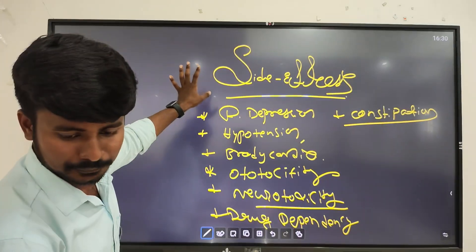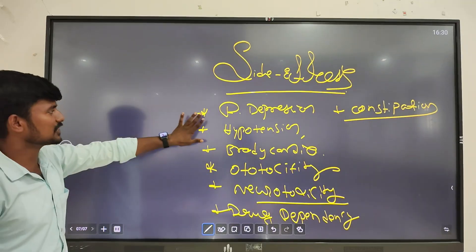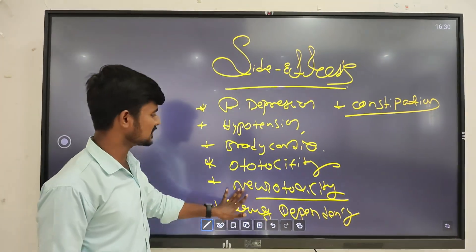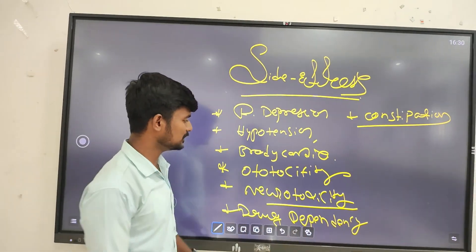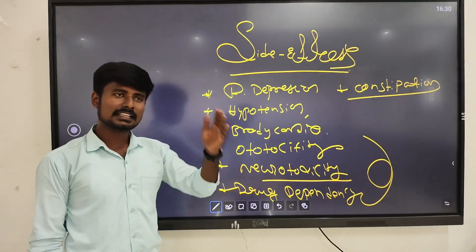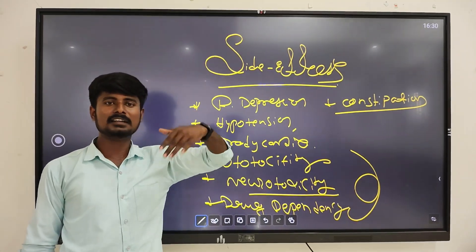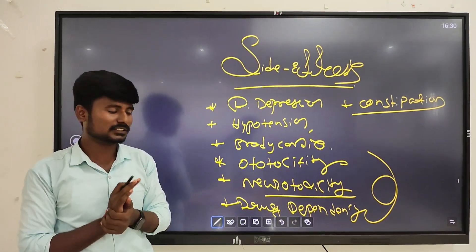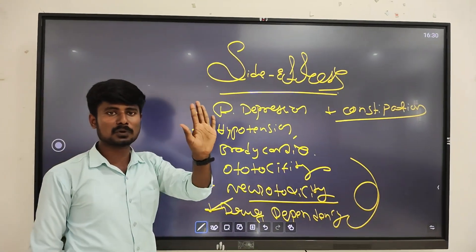More side effects: respiratory depression, hypotension, renal failure, ototoxicity, neurotoxicity, drug dependency, and constipation. Drug dependency: once a person uses sedatives and hypnotics, they start to depend on them - when they take the tablet, they become habituated. That is the drug dependency side effect of sedatives and hypnotics.